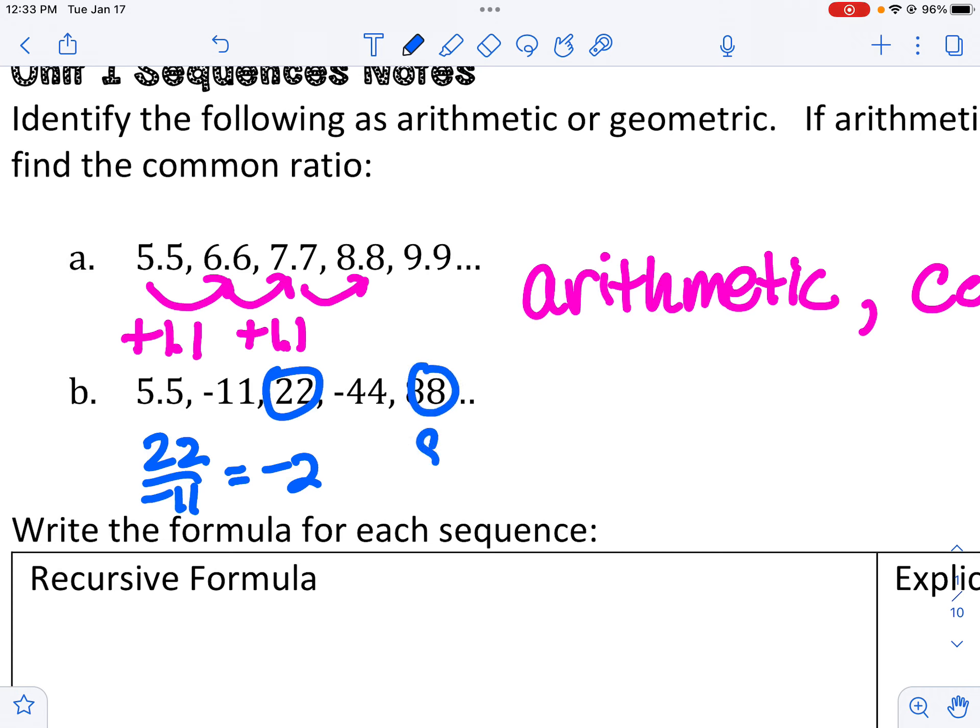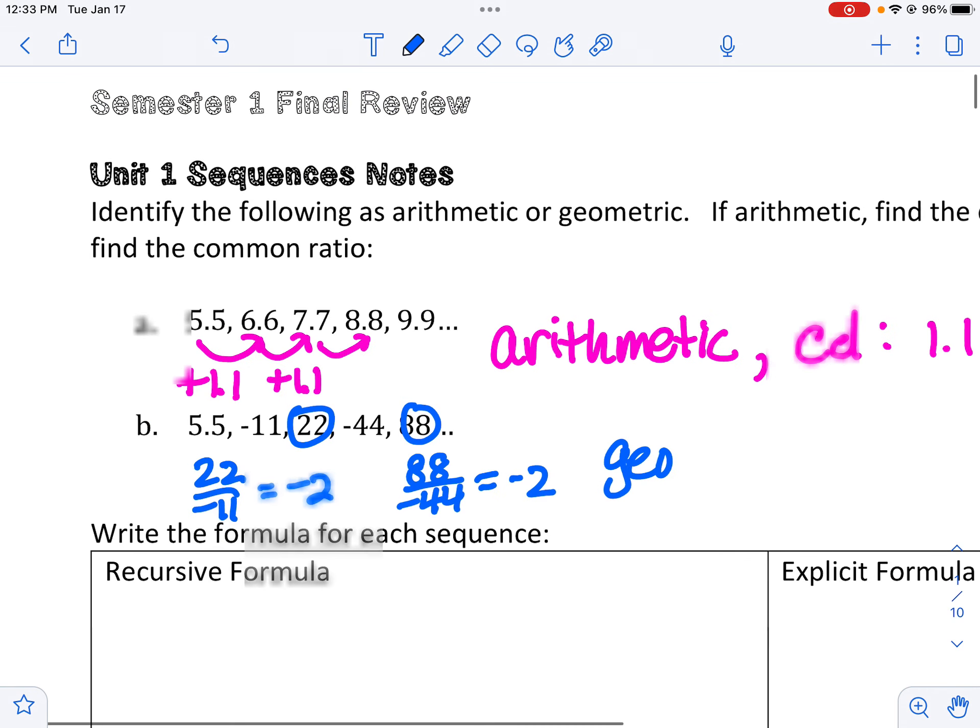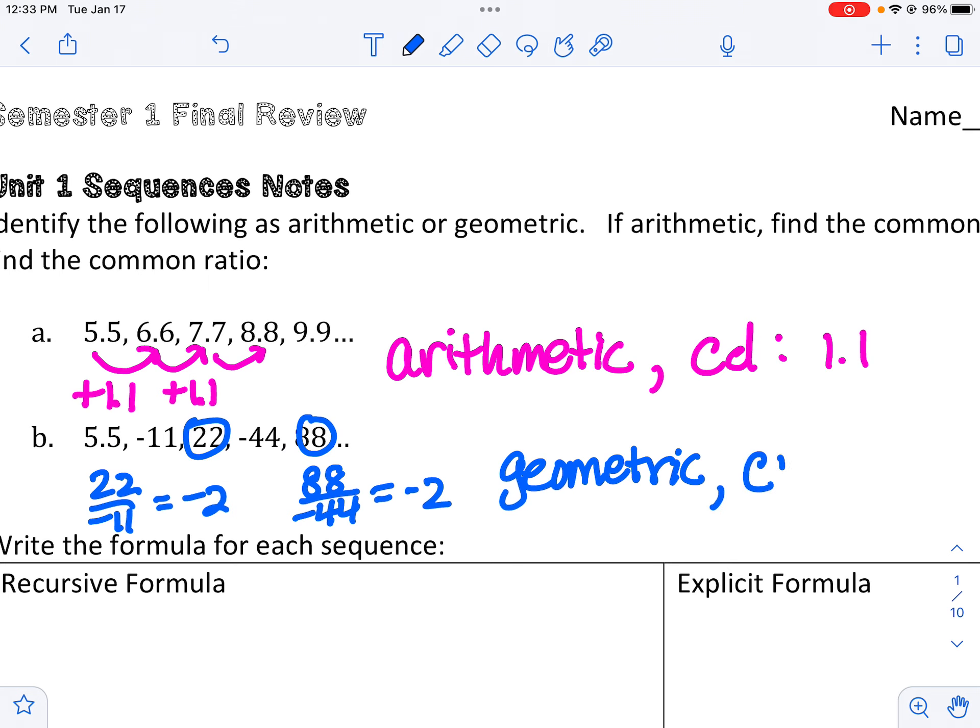And that works for, it should work for every term. So again, if we take 88 divided by negative 44, we get negative 2. So that's an indication this is geometric. And that common ratio, the way we're multiplying by, is negative 2.